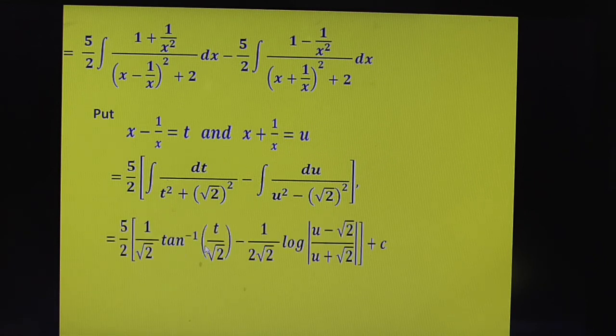What is the formula? 1 by 2a tan inverse x by a. Here, a is root 2, tan inverse t by root 2. u square minus x square. By using standard formula, 1 by 2a log of u minus root 2 by u plus root 2.